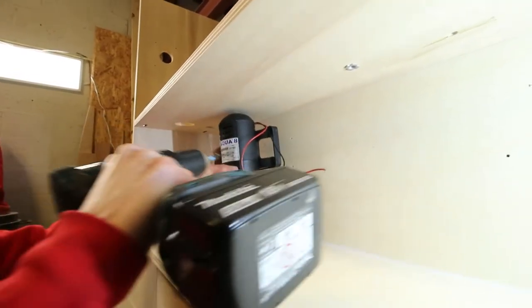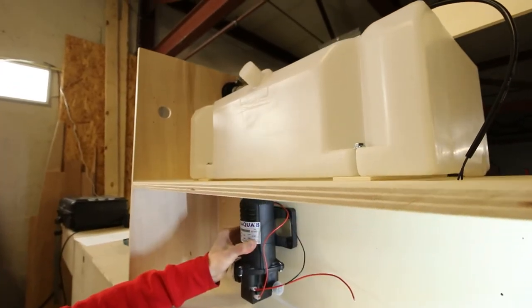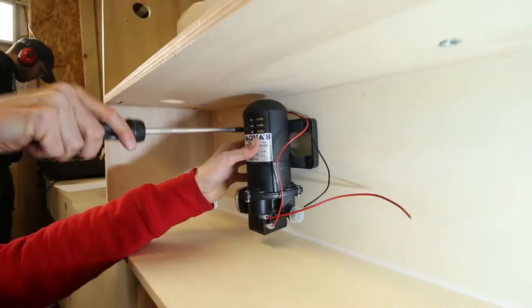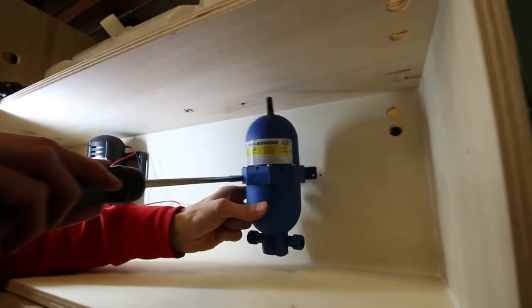The pressure pump is a Fiamma Aqua 8. It has a maximum capacity of 7 liters per minute. We mounted the pump vertically so that the connection with the expansion vessel is more in line.